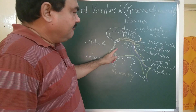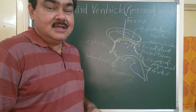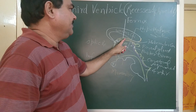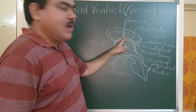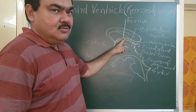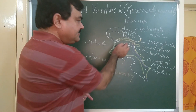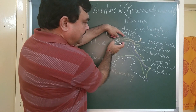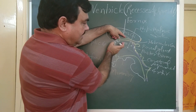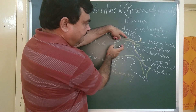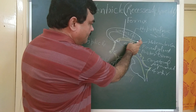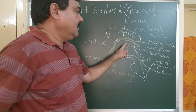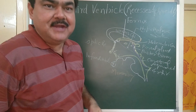So these are the five recesses present in the third ventricle. One important structure here is the tela choroidea — this is a fold of pia mater which invaginates between the fornix and the thalamus to form the tela choroidea.